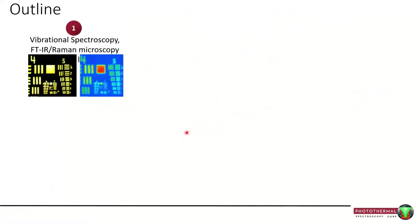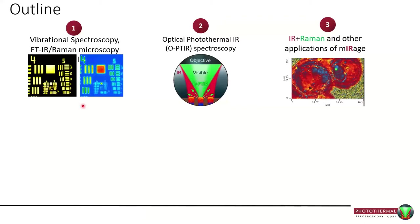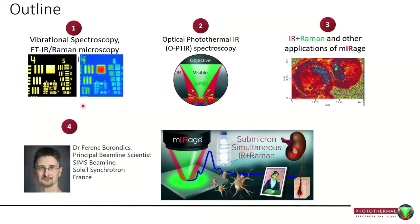The outline today will be: I'll take you through some of the challenges and issues that people doing FTIR and Raman microscopy are facing today. I'll take you through how OPTIR overcomes virtually all of those issues. Then I'll take you through a range of applications that people have published — most of my examples are based on actual publications. That'll be the first half, and the majority will then be Dr. Ferenc Borondix going through his experiences using OPTIR at the Soleil Synchrotron.